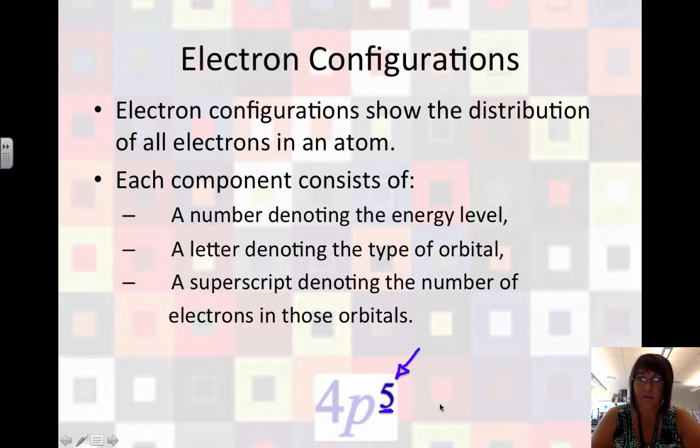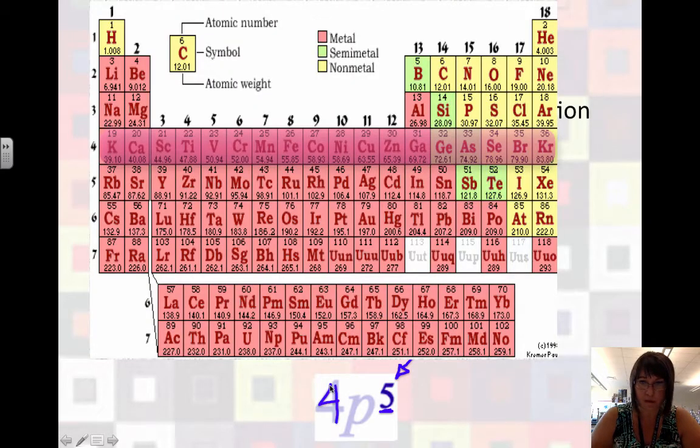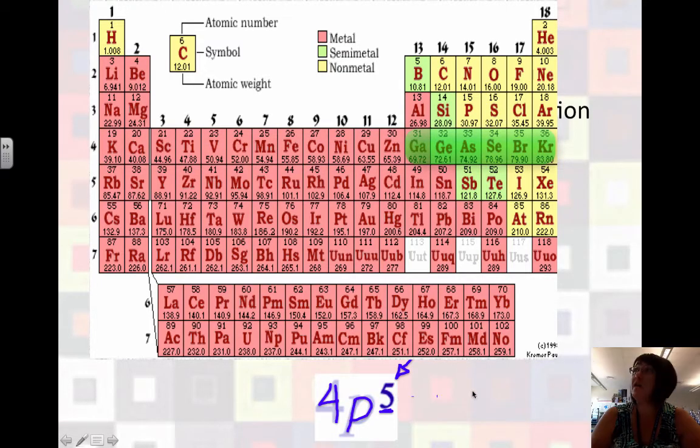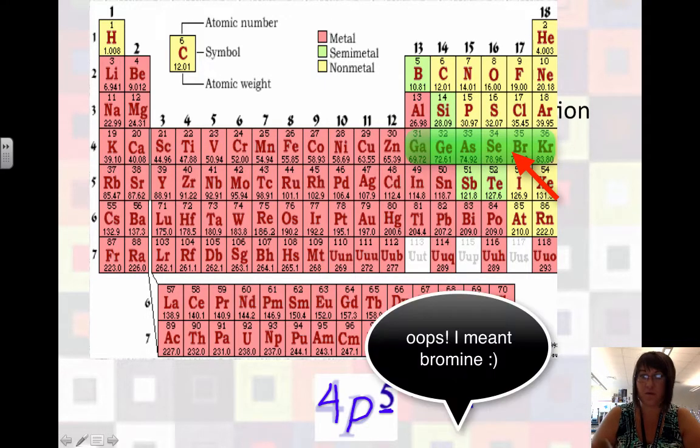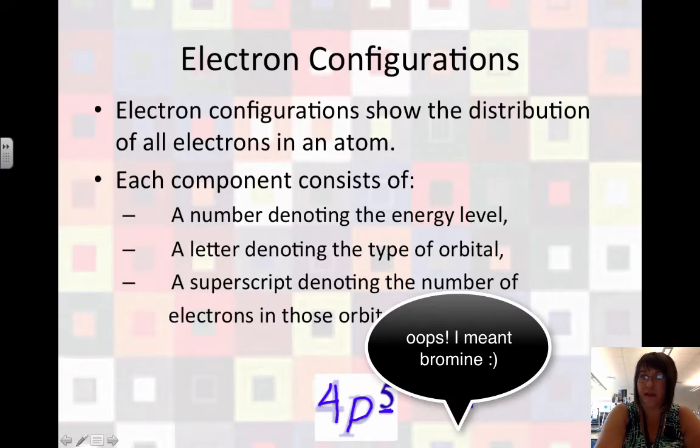Now we can tell which particular atom that is. If you look in the fourth row of the periodic table, on the right-hand side, the P section, and you count across 1, 2, 3, 4, 5, you will find, sitting there, the element chlorine. So we know which one that is by the address that we're given.